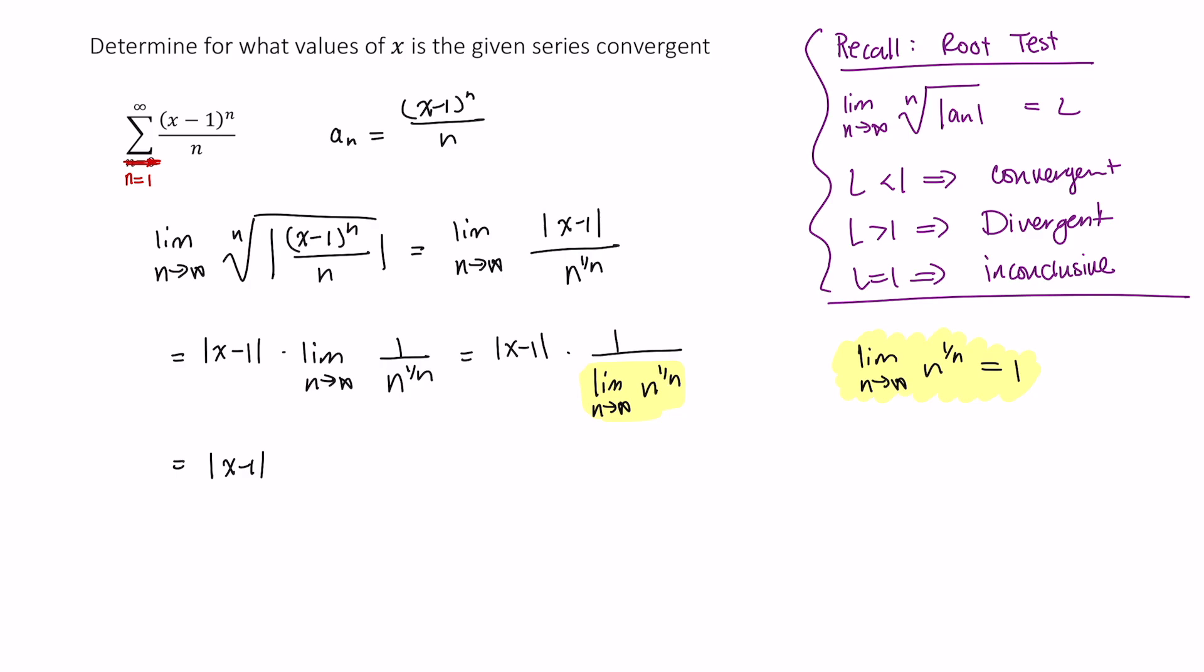Okay, so this is just the absolute value of x minus 1 times 1, which is just itself. This will converge so long as this is less than 1. Well, what does this tell us? Well, this can be equivalently written as negative 1 is less than x minus 1 is less than 1. So adding 1 to all three parts of this equality, we end up with 0 is less than x is less than 2. So right now, what do we know?